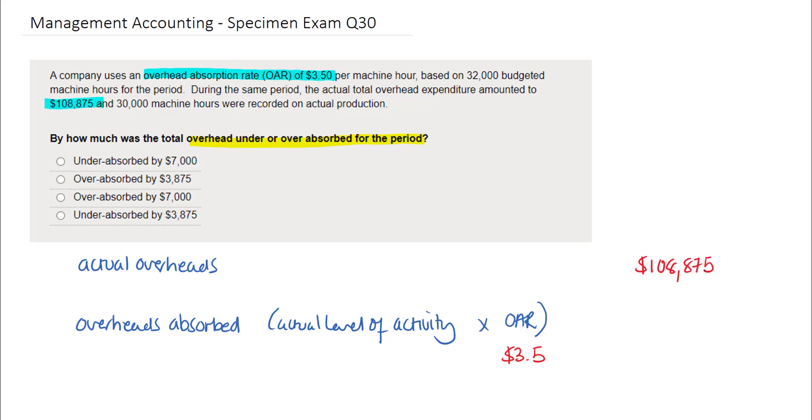Next, we're told that 30,000 machine hours were recorded on actual production. This would be the actual level of activity because the OAR has been calculated using machine hours. So 30,000 is our actual level of activity. To get the overheads absorbed, we simply multiply the actual level of activity by the OAR to give us £105,000.